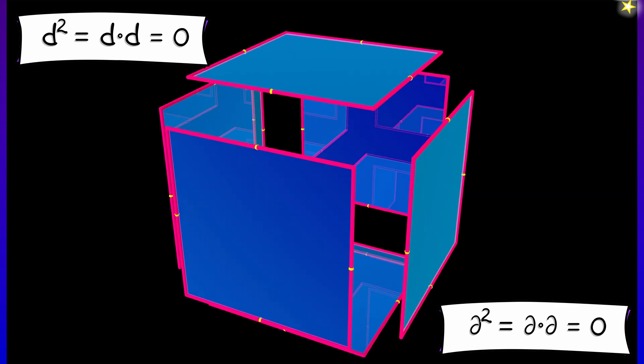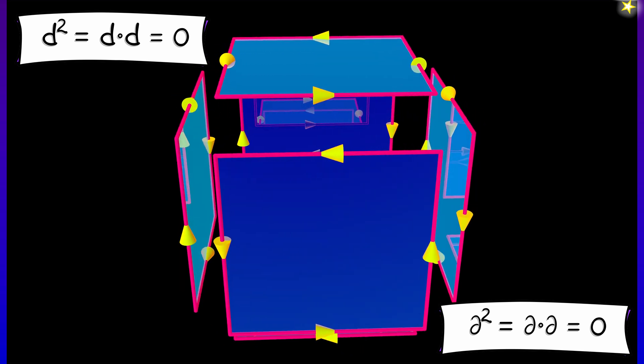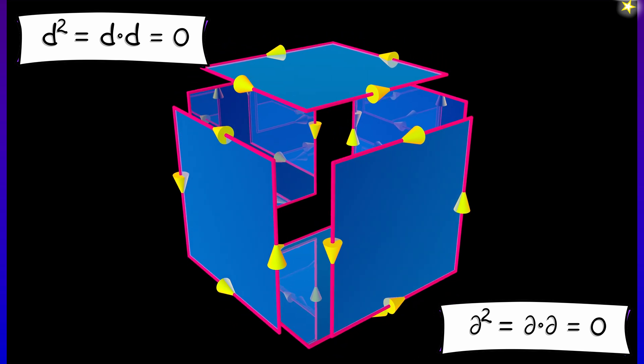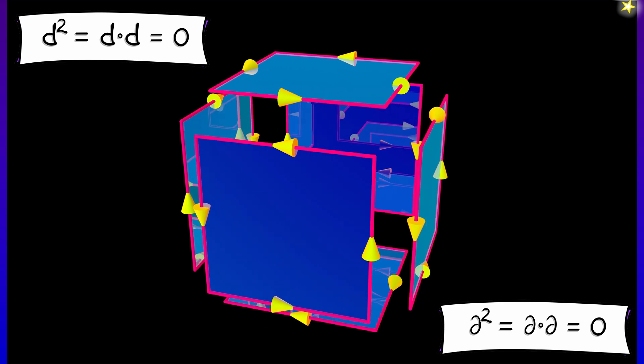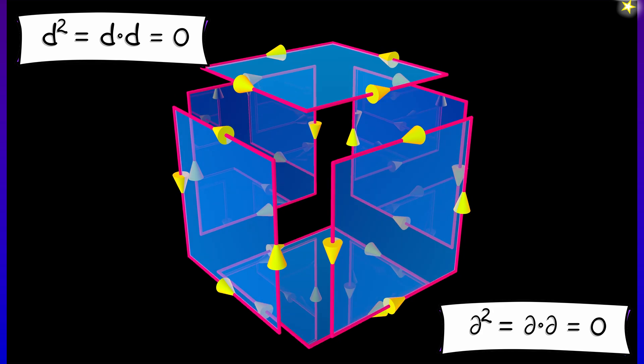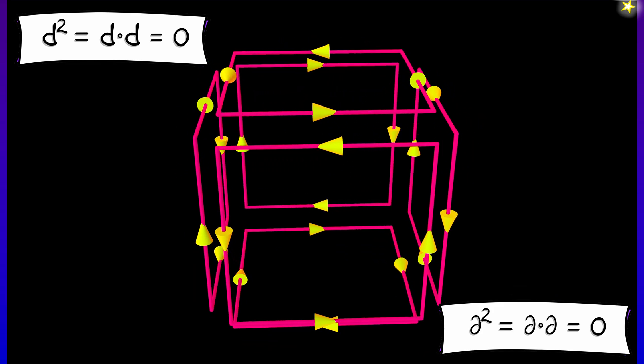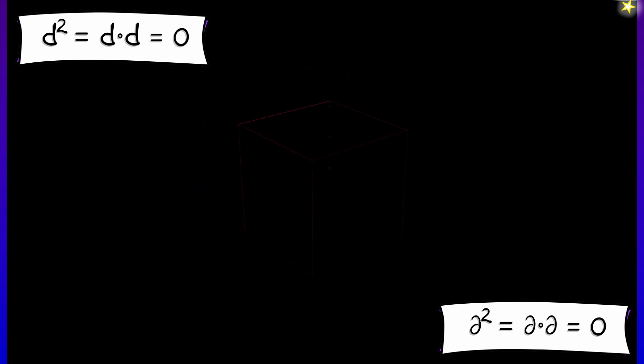Now take the boundary of each of those, and I get a whole bunch of edges. Ah, but you have to remember the orientations of those edges. And even though we have a lot of repetition going on, they're all in the opposite direction. And so they cancel. The boundary of a boundary of a cube is empty.